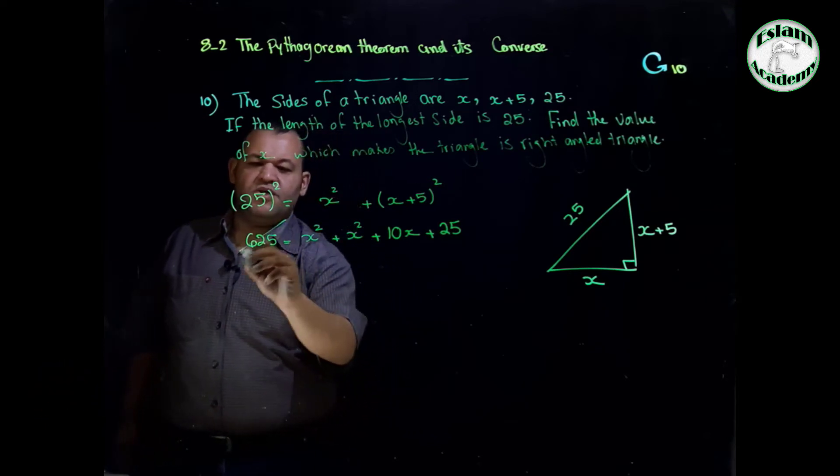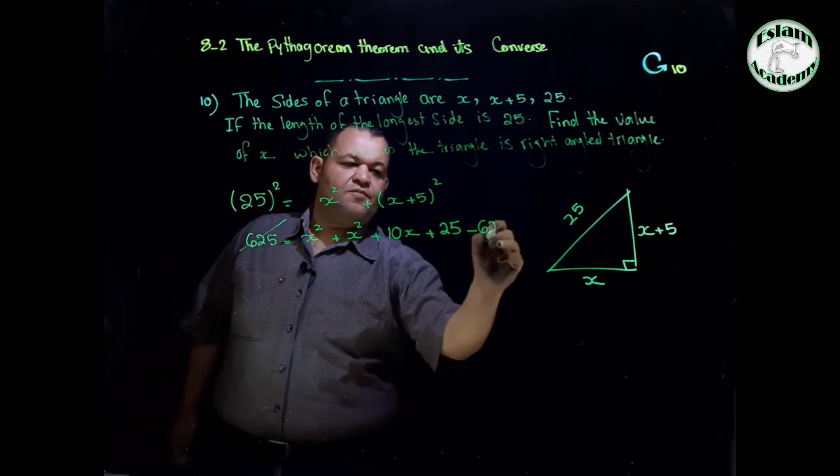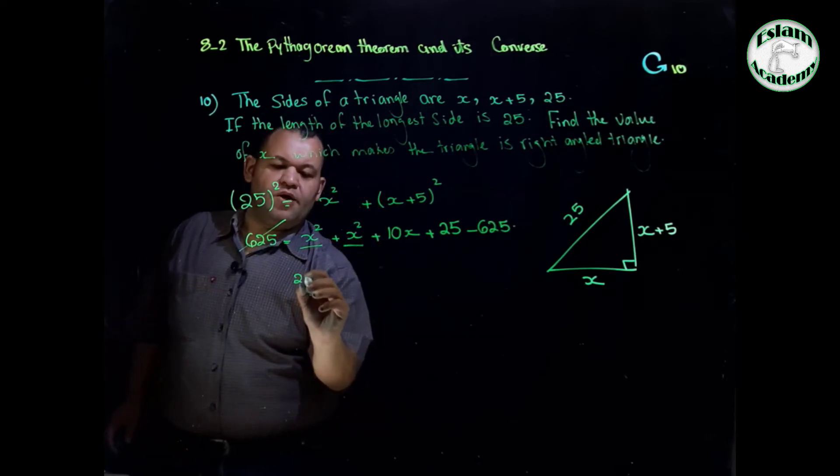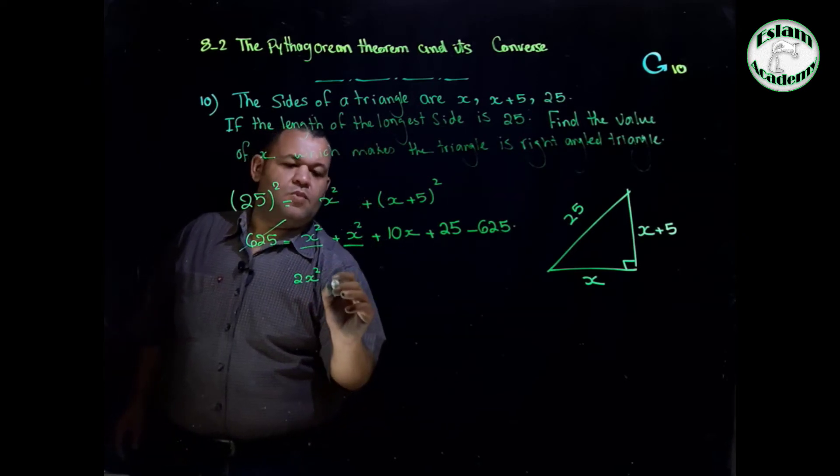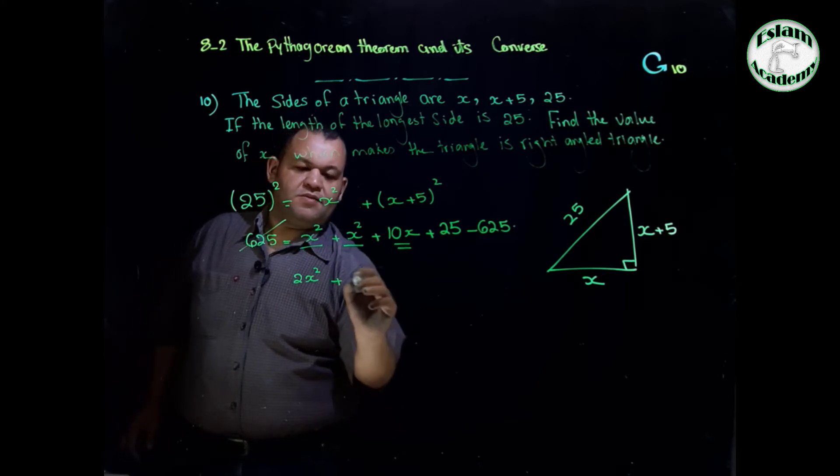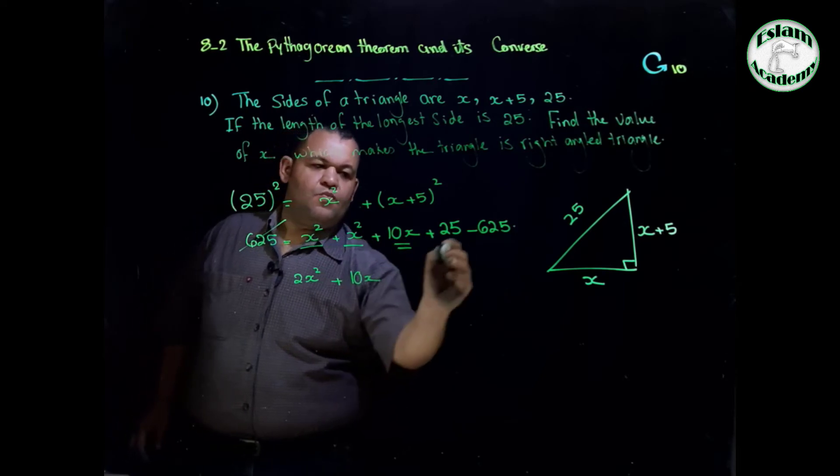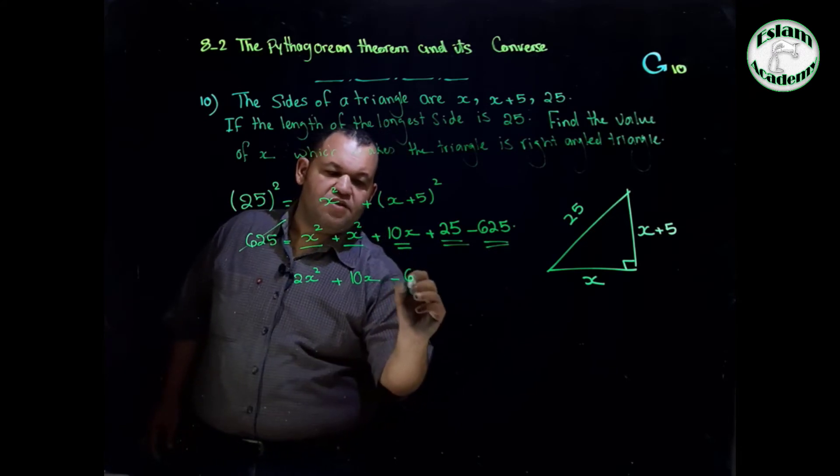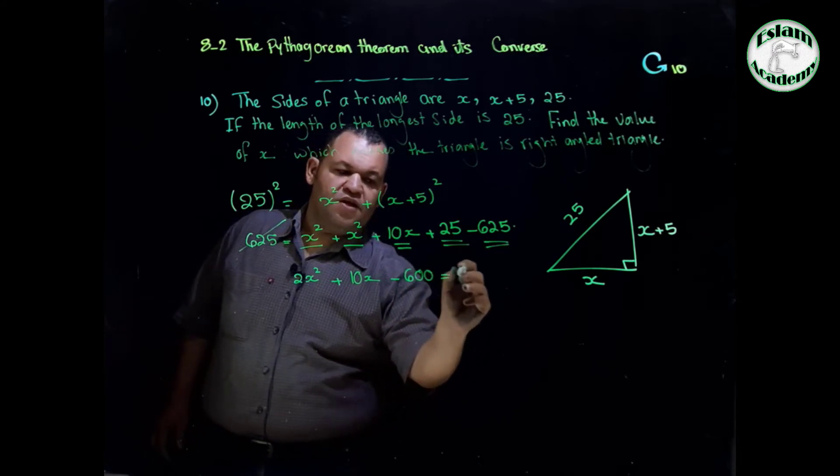Now we need to solve the equation by subtracting 625. So x squared and x squared equals 2x squared plus 10x plus 25 minus 625 equals negative 600. All of that equals 0.